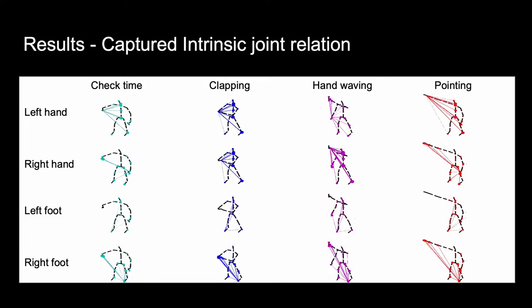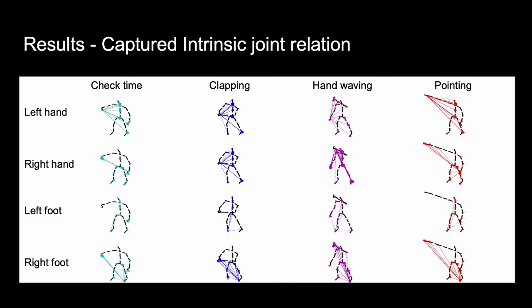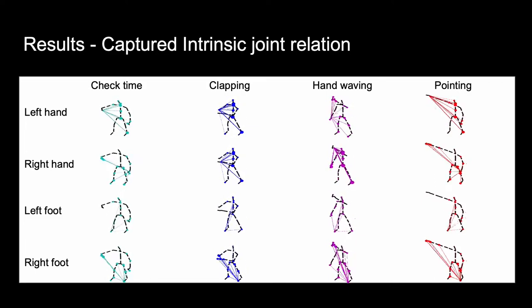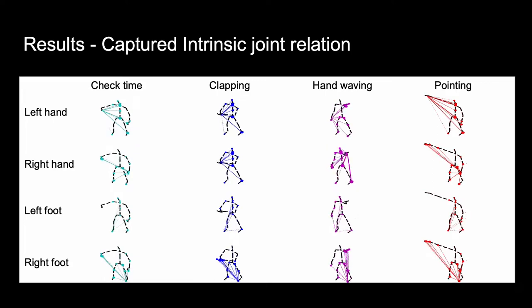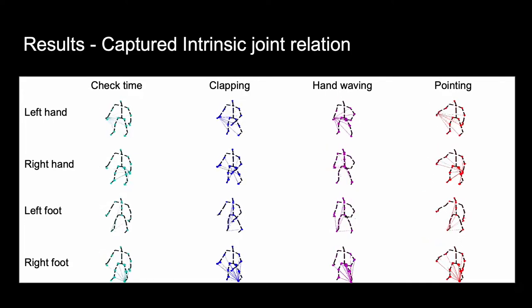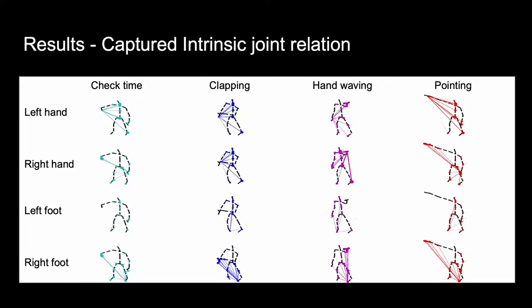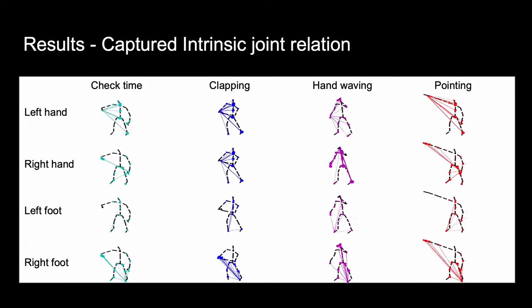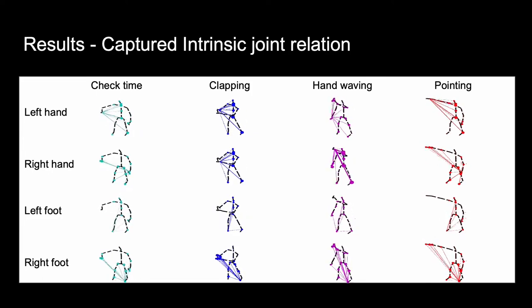Colored lines indicate inferred topology from a selected joint to all other joints. The thickness of the colored lines on the joint is proportionate to the strength of the inferred relation.